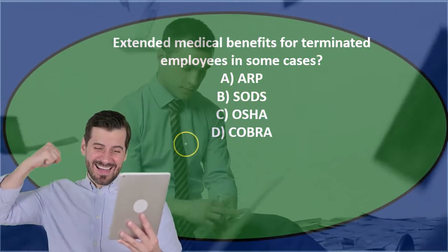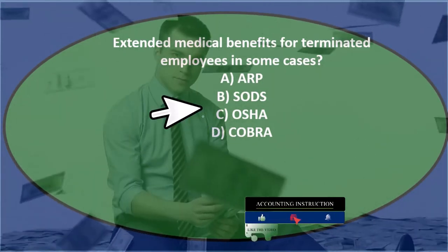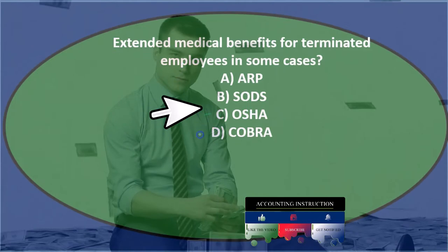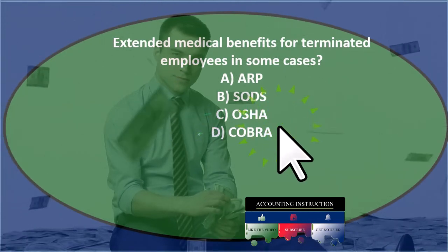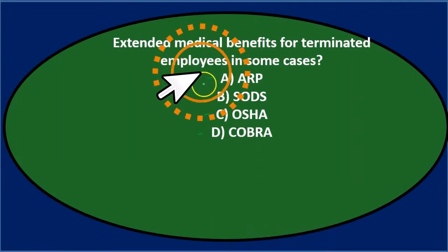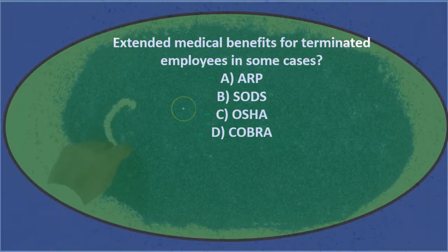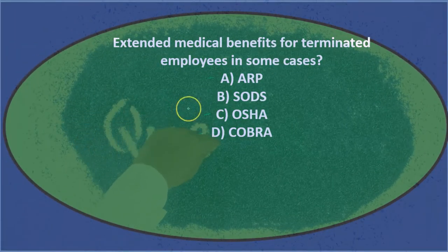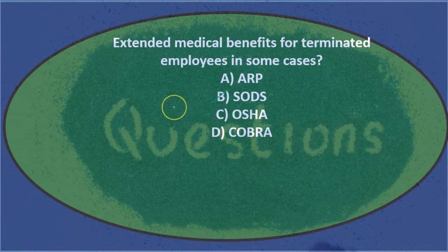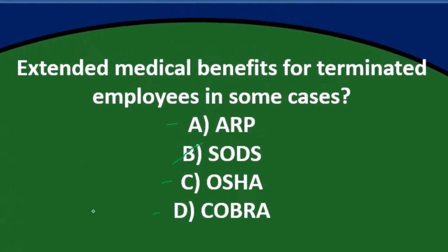If we didn't really know what they stood for, we could try to see what we recognize most. To most people, I think a lot of people would have heard OSHA. COBRA is another one that may ring a bell. ARP possibly sounds like it could be something. SODS might be less familiar. So if we had no idea, I'd try to cross out based on what we think is most familiar to payroll legislation.